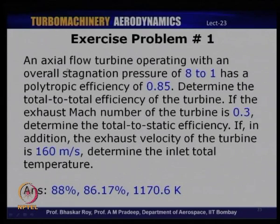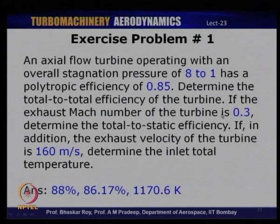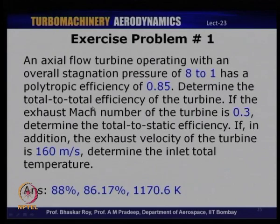Exercise problem 1: An axial flow turbine operating with an overall stagnation pressure ratio of 8:1 has a polytropic efficiency of 0.85. Determine the total-to-total efficiency. If the exhaust Mach number is 0.3, determine the total-to-static efficiency. If additionally the exhaust velocity is 160 m/s, determine the inlet total temperature. Answers: total-to-total efficiency = 88%, total-to-static efficiency = 86.17%, inlet total temperature = 1170.6 K.